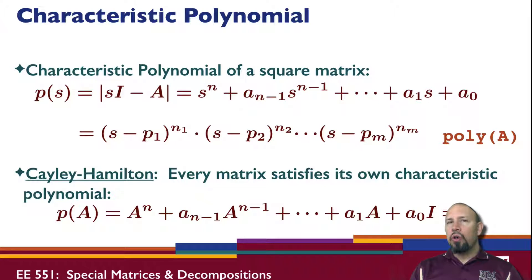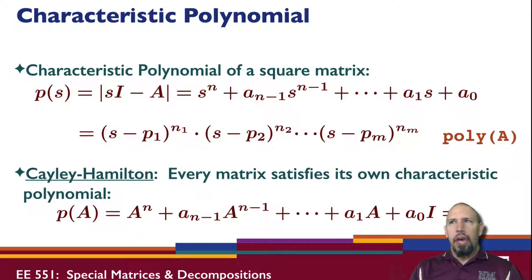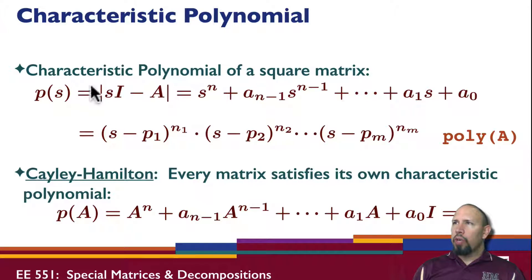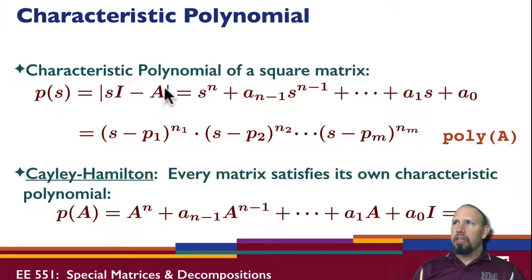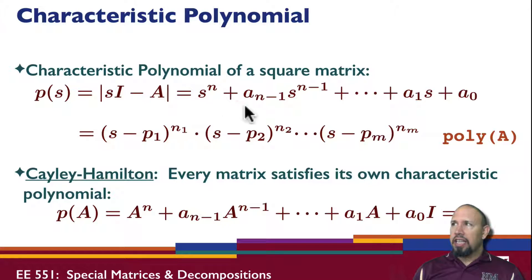To understand what's going on with the eigenvalue-eigenvector decomposition, we need to understand that there are special properties when you have square matrices. The first thing we can work with is something called a characteristic polynomial. The polynomial P is given by the determinant of the matrix SI minus A. When you take the determinant of this matrix, you get a scalar quantity — but it's a scalar function of S, and it's actually a polynomial. For an nth order matrix, I get an nth order polynomial.